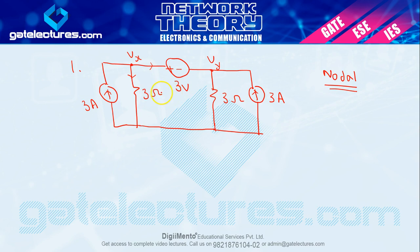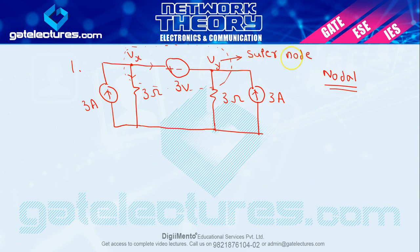जहाँ दो nodes के बीच में resistor की जगह एक voltage source ही connected हो, तो इस position को, या इस situation को हम कहते हैं super node। तो यह आपका बन चुका है super node। (When a voltage source is connected between two nodes instead of a resistor, that situation is called a super node.)